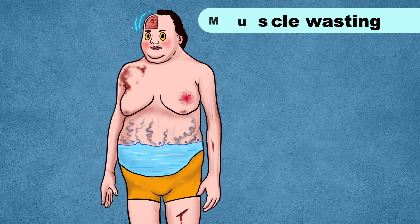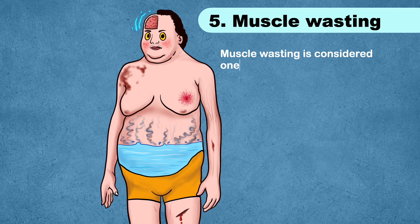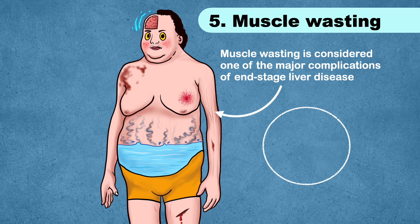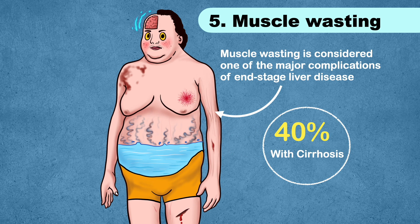Another important sign is muscle wasting, which is considered one of the major complications of end-stage liver disease, and its incidence increases along with disease progression. It is found in approximately 40 percent of patients with cirrhosis.